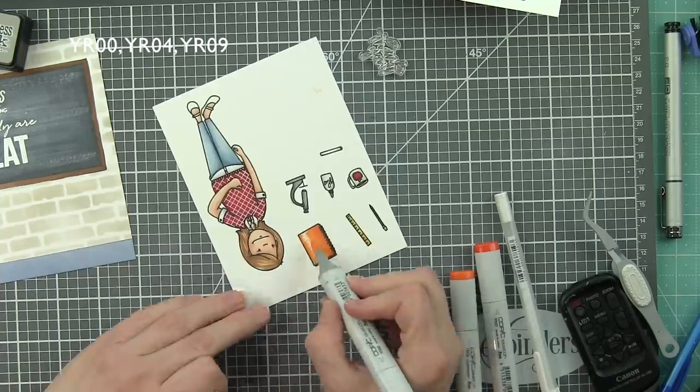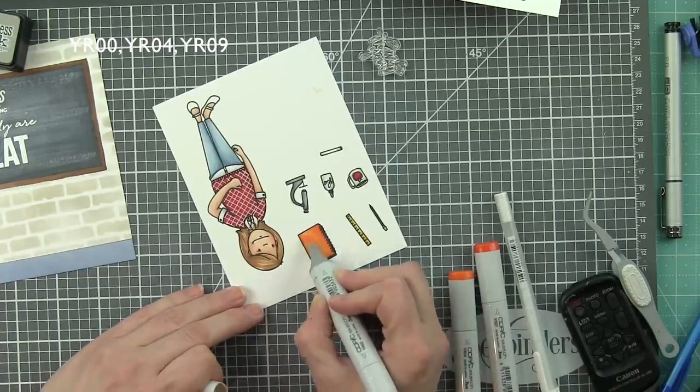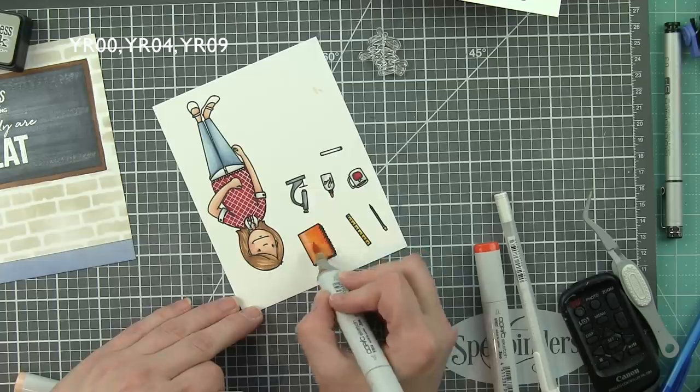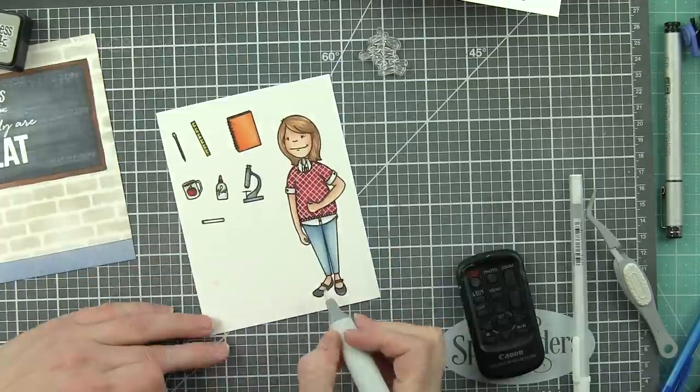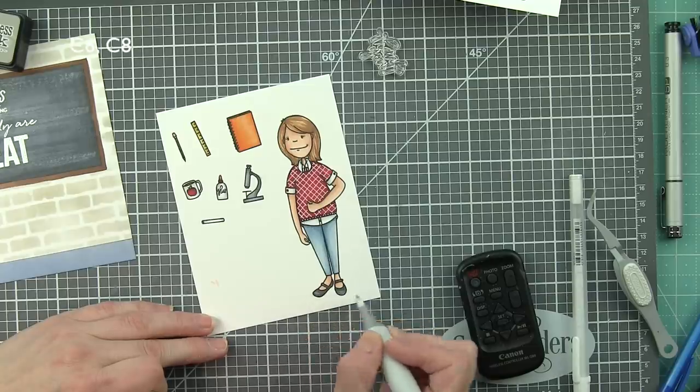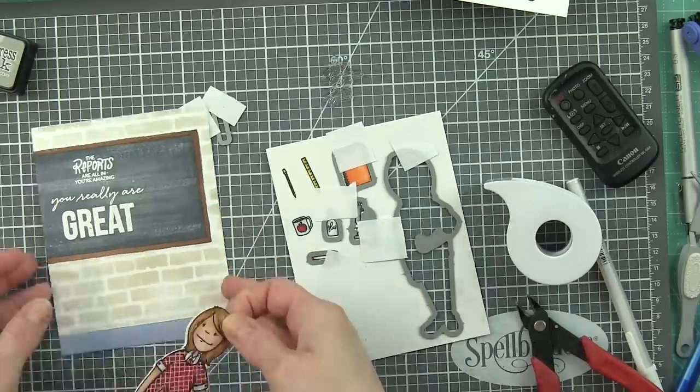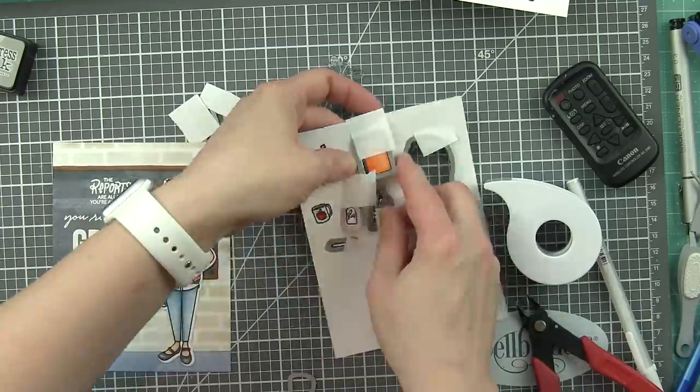And that'll add a nice little pop of color. Kind of keeps with the primary color scheme we've got with red and blue and yellow. And once everything's colored in, let's go ahead and die cut these with the coordinating teacher lady dies.